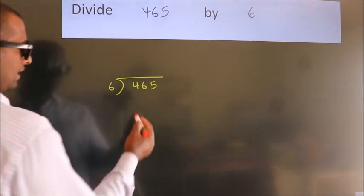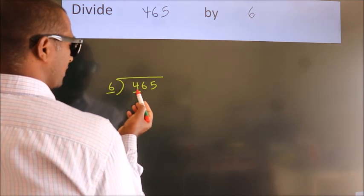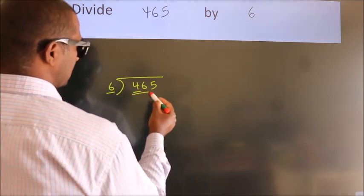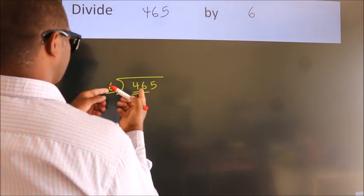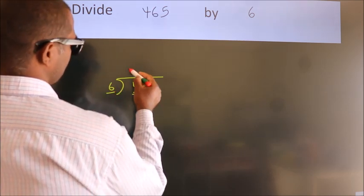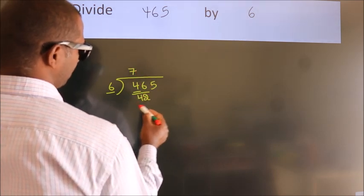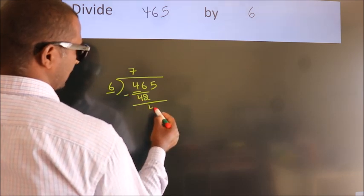Next. Here we have 4, here 6. 4 smaller than 6. So we should take two numbers. 46. A number close to 46 in 6 table is 6 times 7 equals 42. Now we should subtract. We get 4.